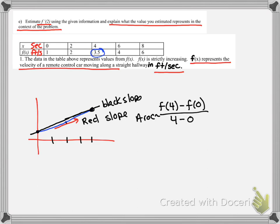So we're looking at 3.5 minus 1, all over 4 minus 0.